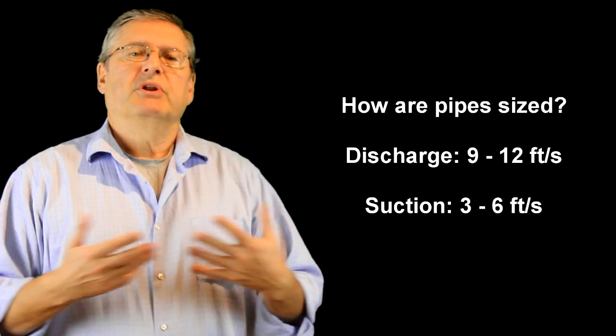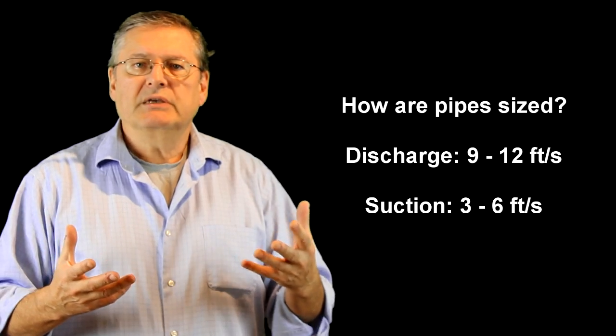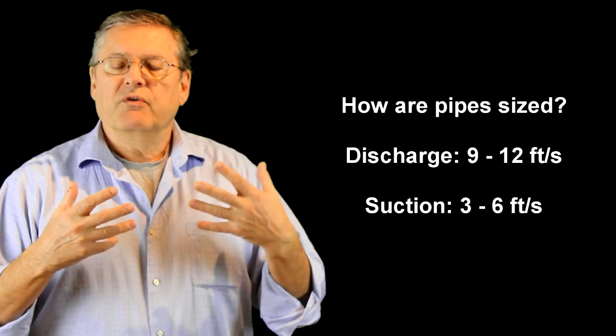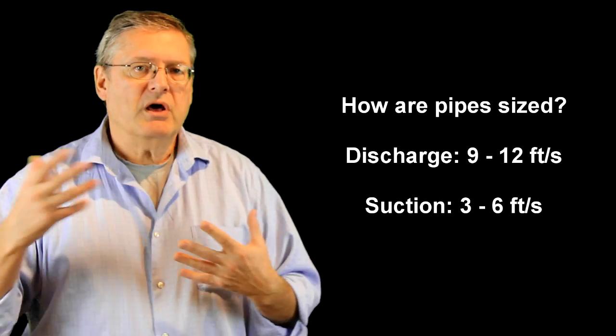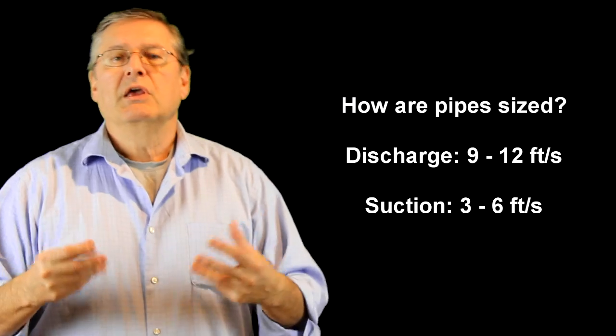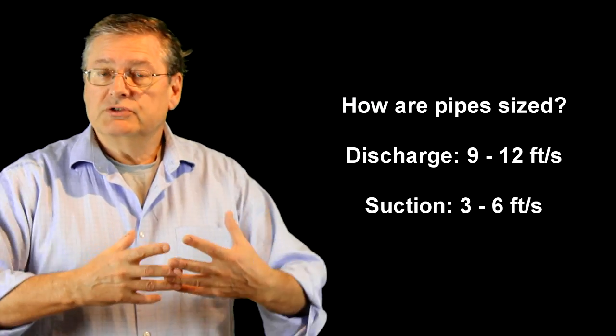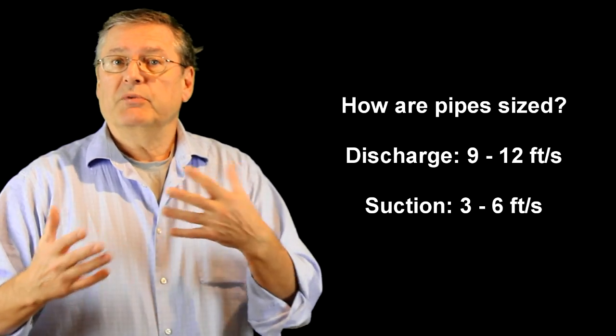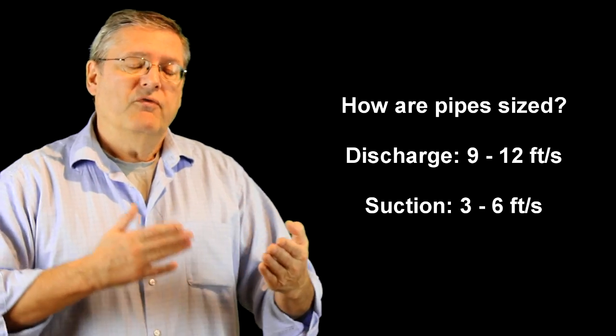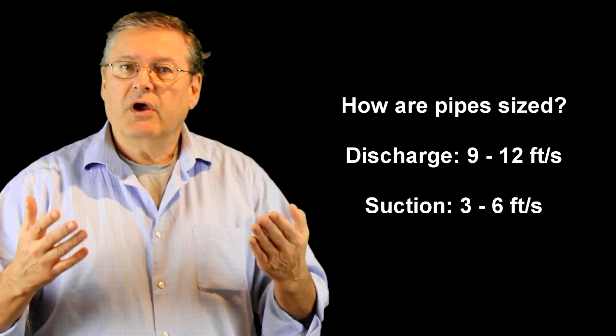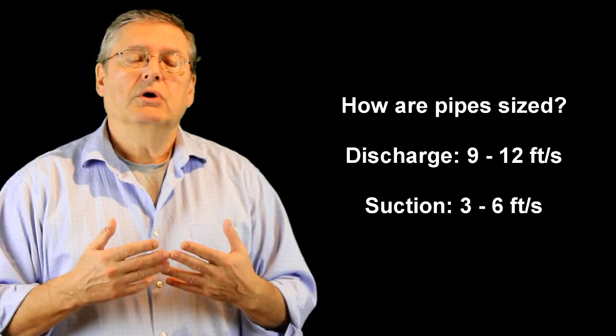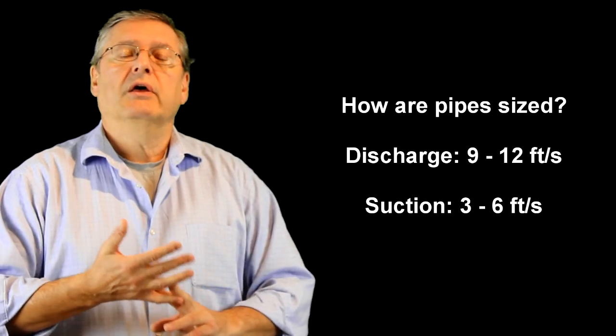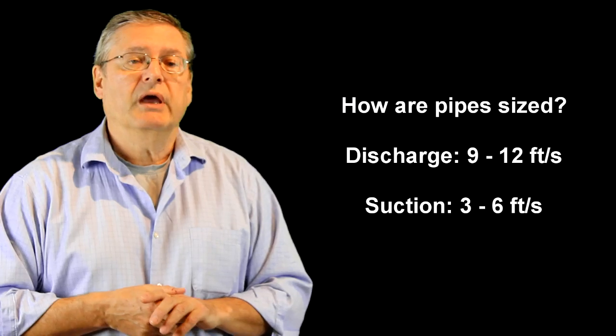Obviously somebody could do an economic analysis of the pipe size versus the amount of friction it causes. If it's very small there'll be a lot of friction and the pump will have to be bigger, which is costly. If the pipe size is very large then the power can be less, so there's a trade-off. If you have the velocity and flow rate you can figure out the diameter.